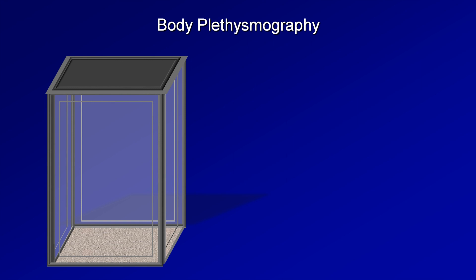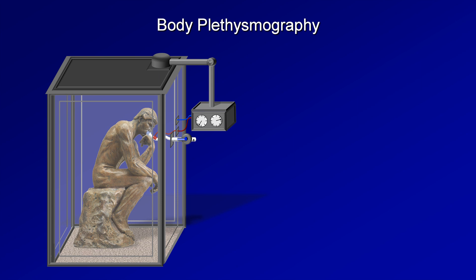Body plethysmography works on a completely different principle. It starts with a clear plastic or glass box the size of a phone booth. There is a mouthpiece inside and a tube to the outside air. Attached to this tube, outside of the box, is a stopcock or other type of closeable valve. Then there are pressure transducers which record the pressure within the airflow tube and within the box itself. The patient sits inside the box, quickly panting with the airway open when it is suddenly shut while the patient continues to pant. This creates oscillations in the airway and box pressures.